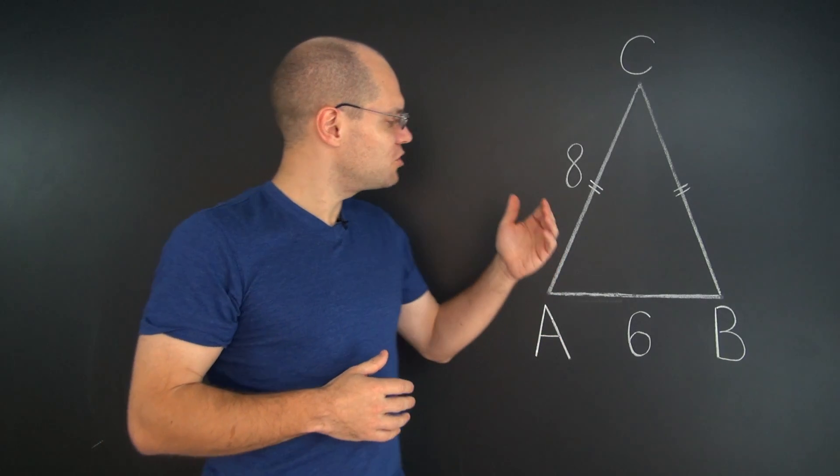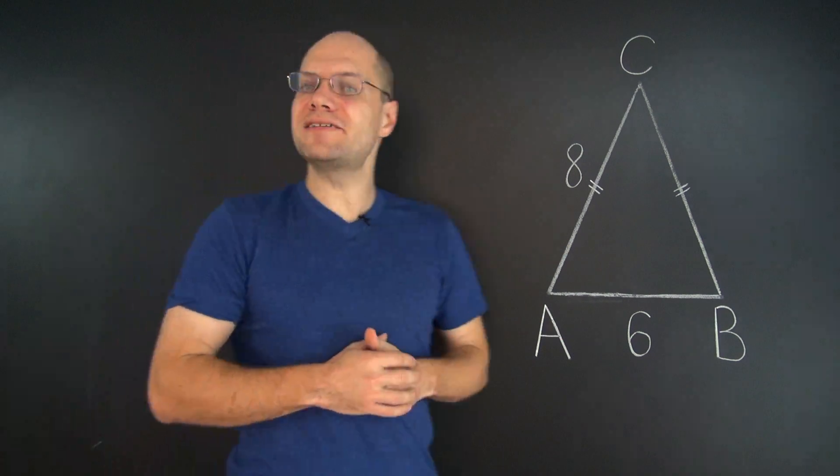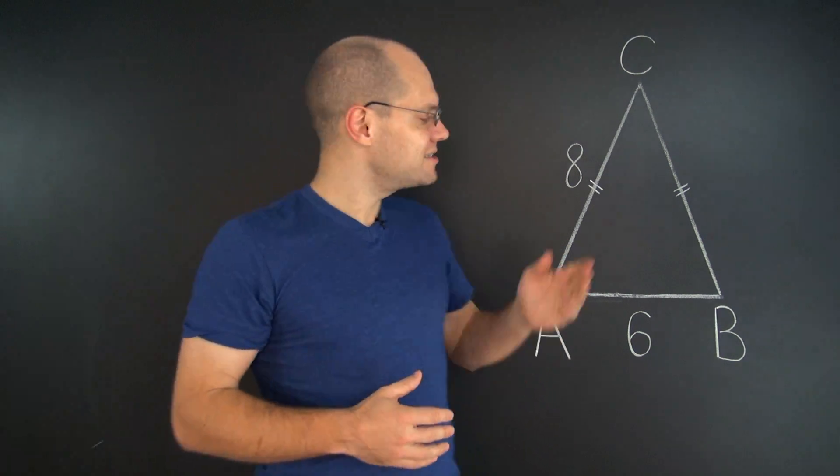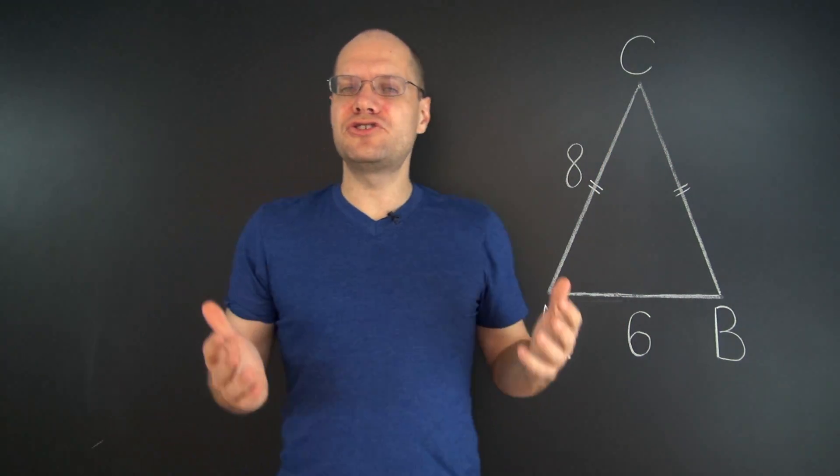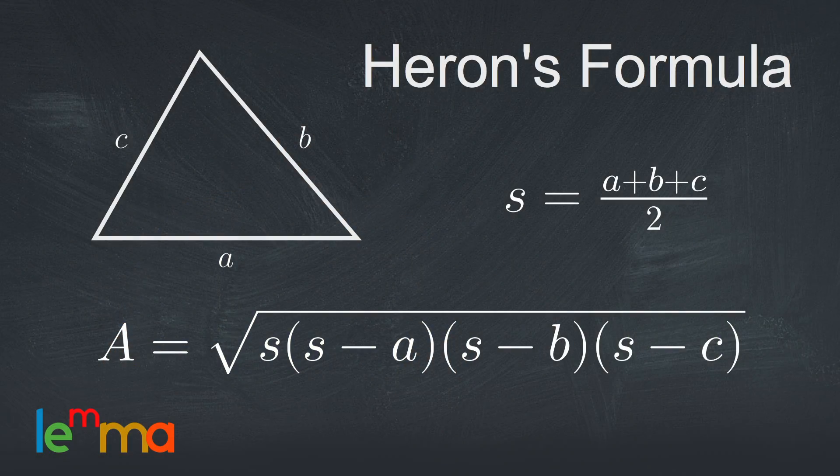In this problem, we want to evaluate the area of this isosceles triangle whose sides are 8, 8 again, and 6. Now you should be aware of Heron's formula, which will give you the area of any triangle, not necessarily isosceles, as long as you know its sides.